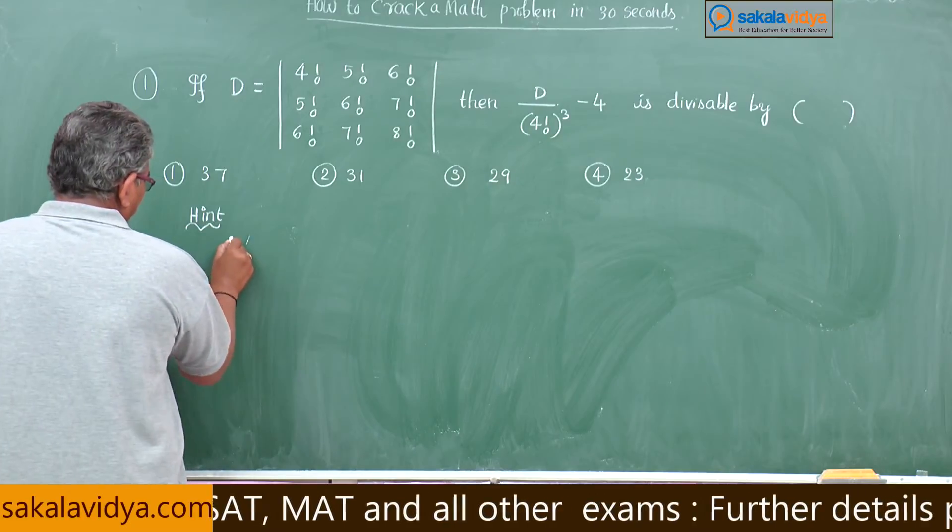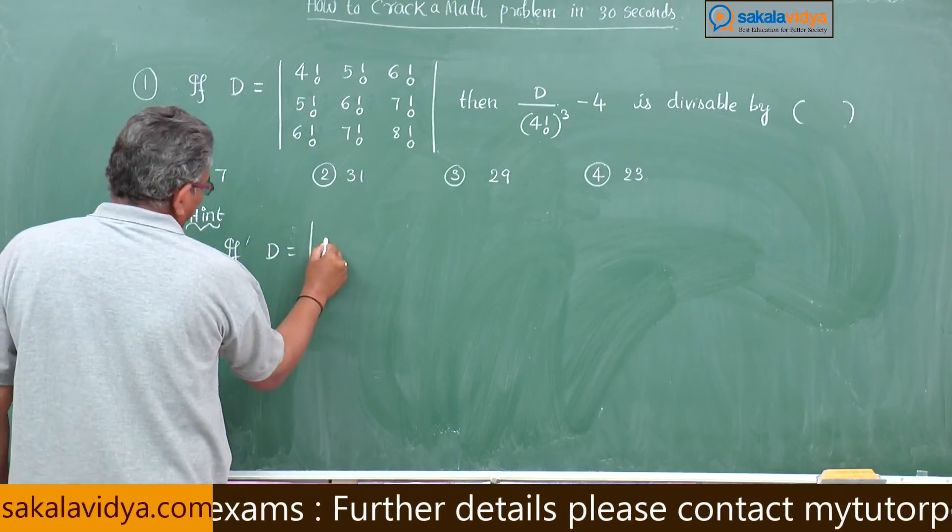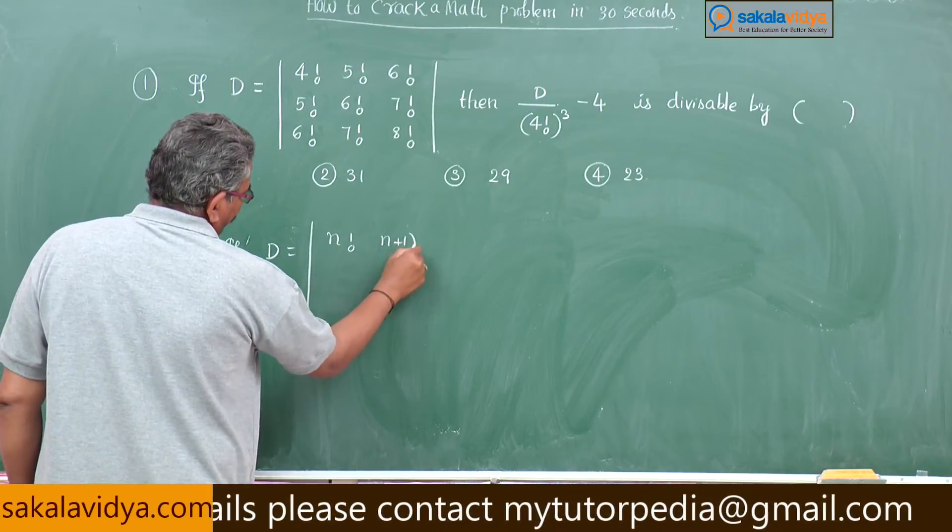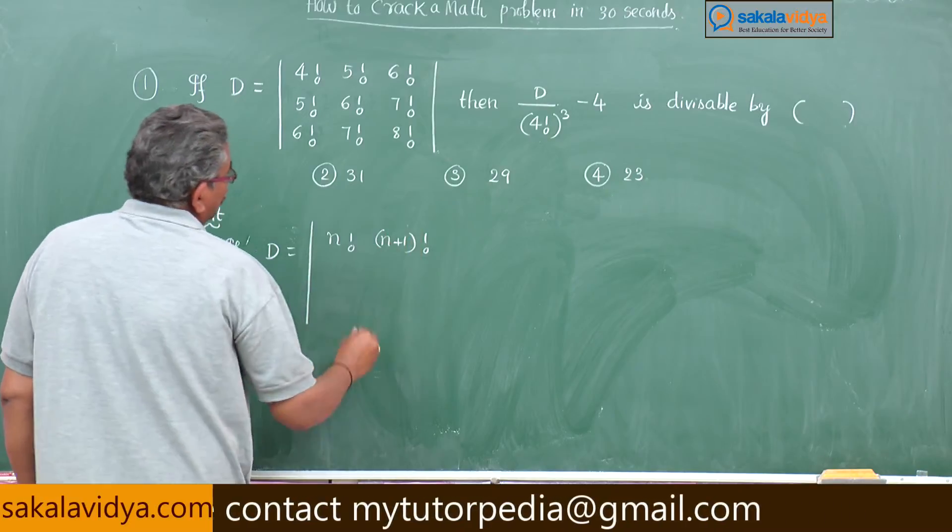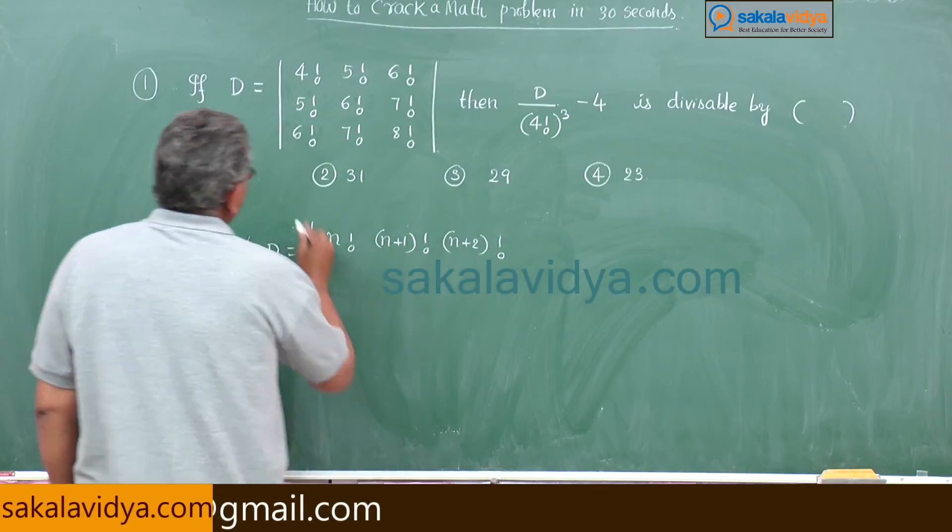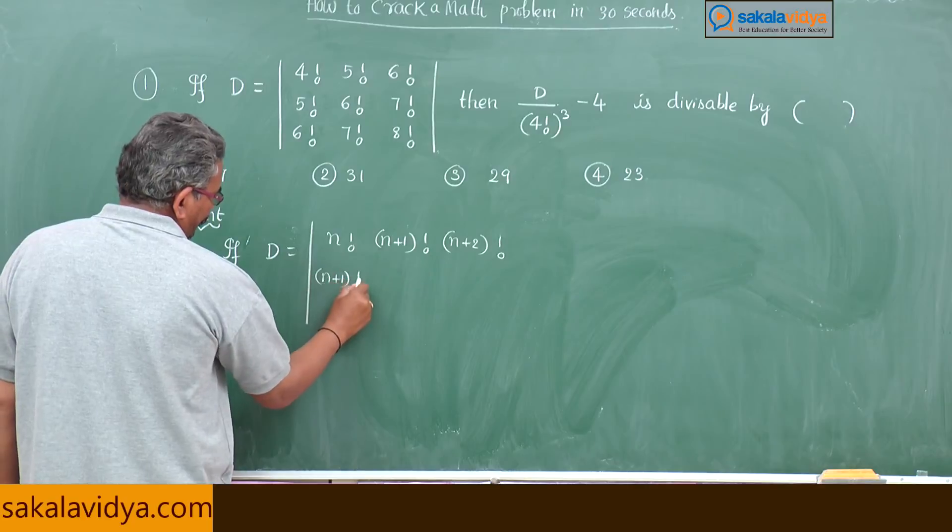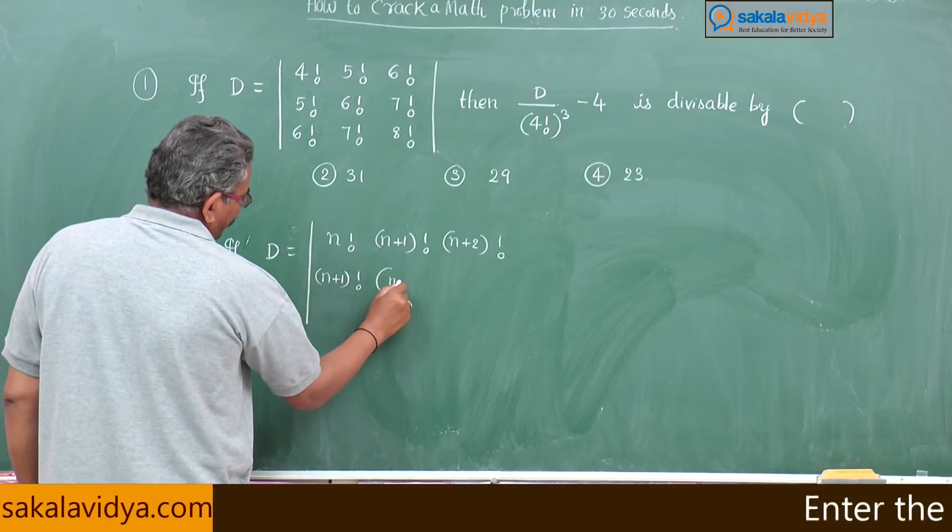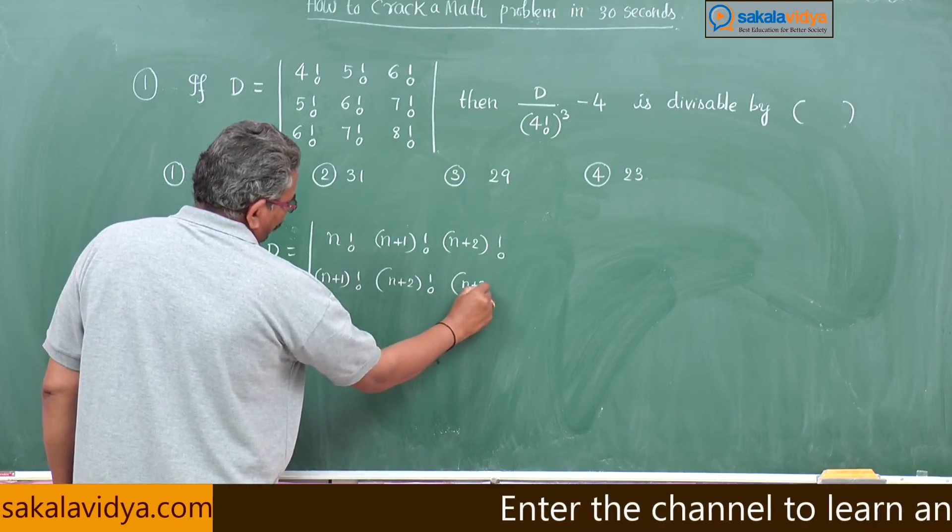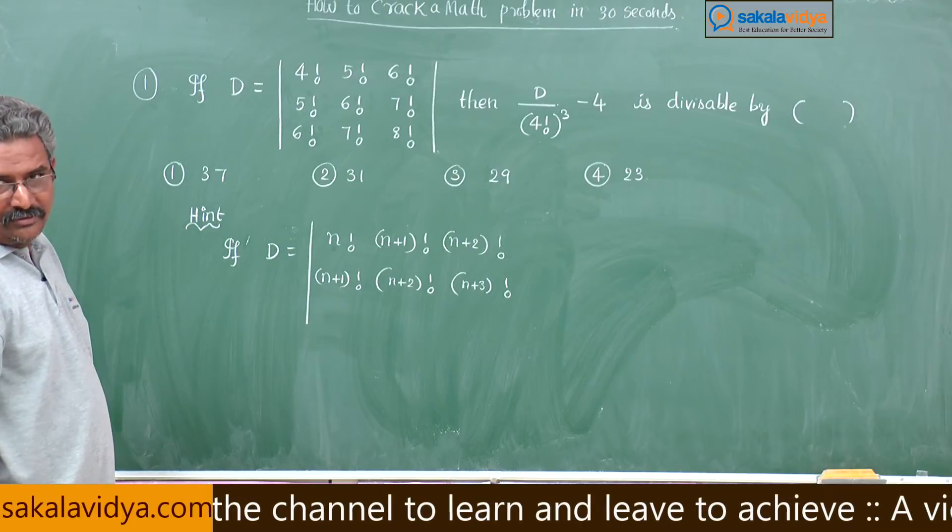Now, if D is equal to determinant of N factorial, N plus 1 factorial, N plus 2 factorial; N plus 1 factorial, N plus 2 factorial, N plus 3 factorial. That means N stands for 4 here, N factorial stands for 4 factorial.